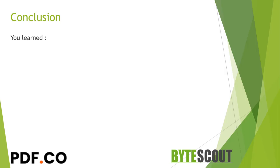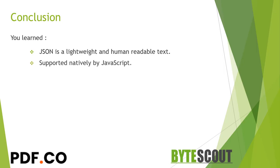For the summary, in this course we have learned that JSON is lightweight, open standard and human readable text. It is based on a subset of JavaScript, which is good as it is supported natively by JavaScript.